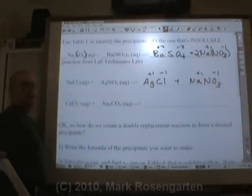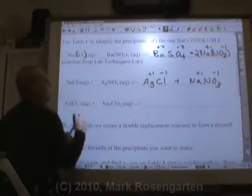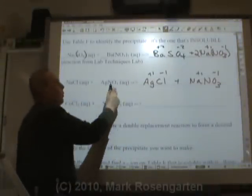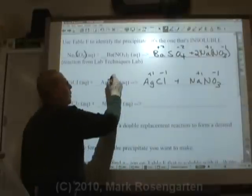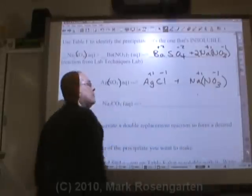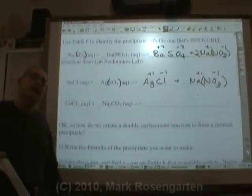And because we have the same number of ions on both sides, one sodium, one sodium, one chloride, one chloride, one silver, one silver, one nitrate, one nitrate, it's now completely balanced.